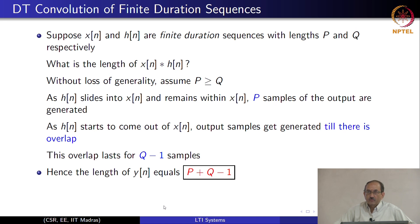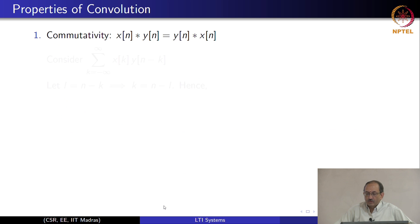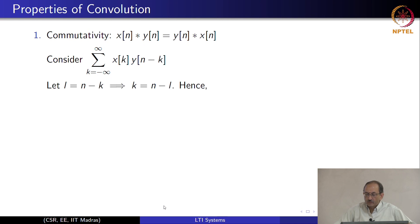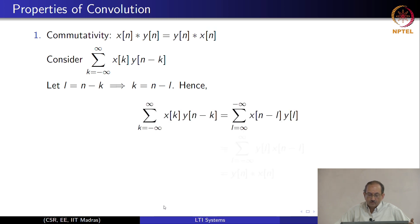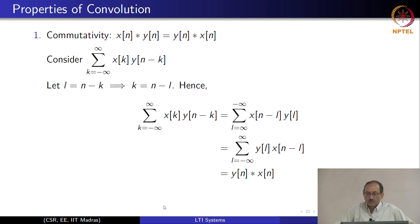Let us look at properties of convolution that you must already be familiar with. Convolution is commutative: x convolved with y is the same as y convolved with x, and this is easily seen.